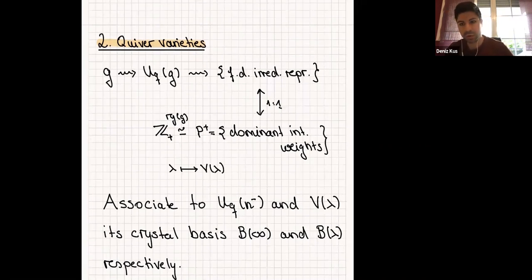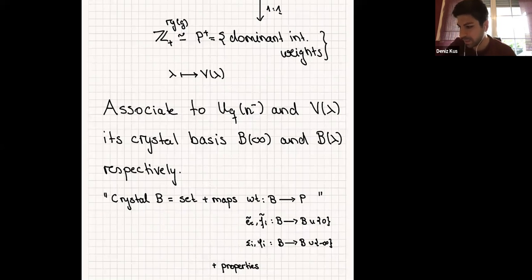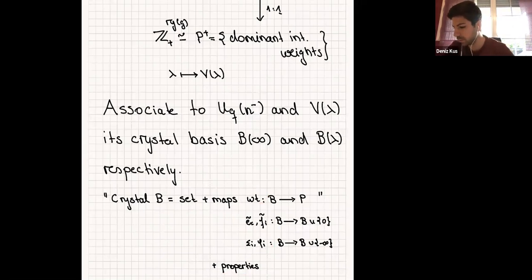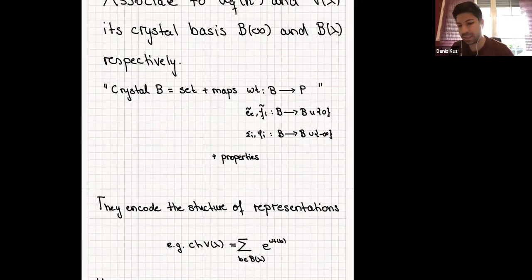If you don't know what a crystal is, you can think of it as a certain set equipped with certain maps: a weight map, the Kashiwara operators Ẽ_i and F̃_i, and ε_i and φ_i, with certain properties — for example, Ẽ_i and F̃_i should be inverse to each other whenever defined. Crystals encode the structure of representations: to calculate the character, dimension, or tensor product decompositions, you can read it off from the crystal. The dimension is the number of elements in the crystal.